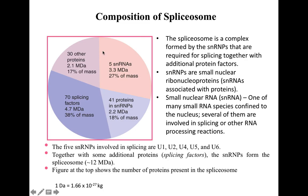This entire complex carries out the removal of the intron molecules and the putting together of the exons. The 5 SNRNPs most commonly involved in splicing are known as U1, U2, U4, U5, and U6.